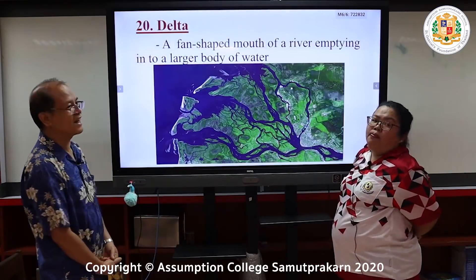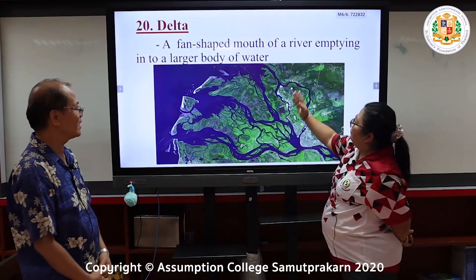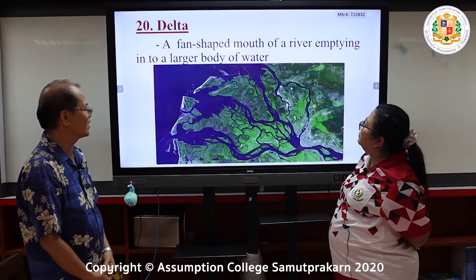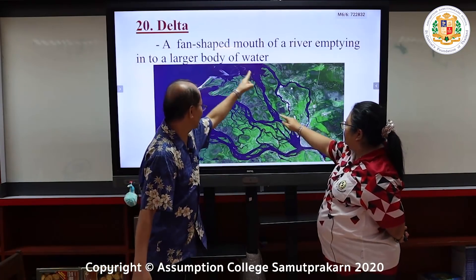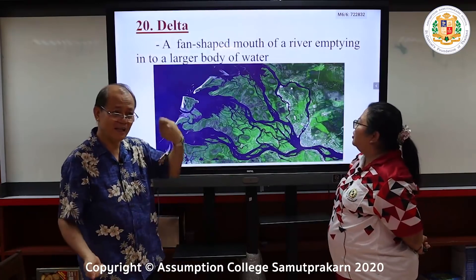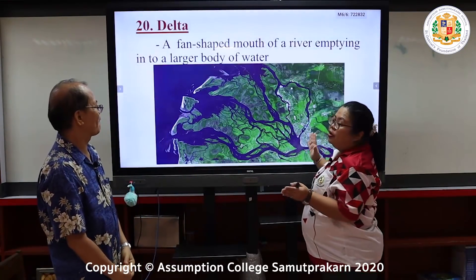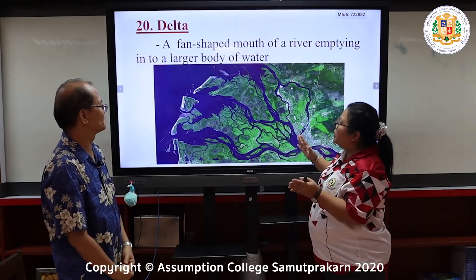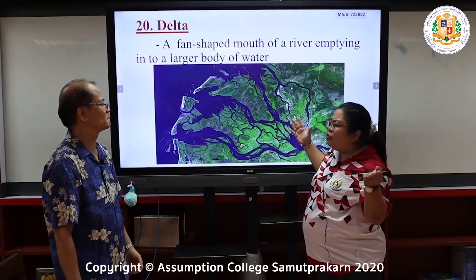A delta is a fan-shaped mouth of a river emptying into a larger body of water. The river flows into the ocean and spreads out in a fan shape. Many rivers fall to the oceans or sea and form this fan-like shape — that is a delta.